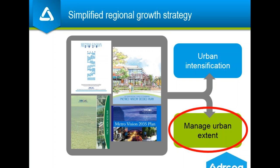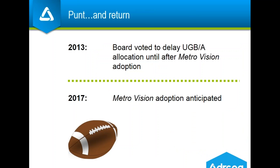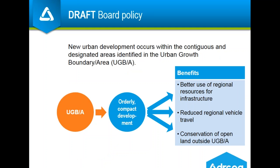The program is set up to allow local governments to request additional UGBA periodically, especially as new plans extend the horizon year. When Metro Vision 2035 replaced Metro Vision 2030 in 2007, there was an opportunity to request additional UGBA back in 2009, but we were in a recession and no one applied. In 2013 the board would normally have begun another UGBA request opportunity, but they delayed that allocation process until after the adoption of a new Metro Vision, anticipated for adoption as early as December.